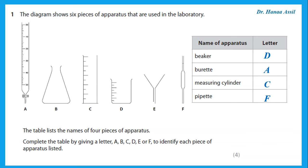The pipette is very accurate. It's used to add a specific amount of solution. If I say I want to add 25.0 centimeter cubed of a solution, I use a pipette. But I cannot use it for any volume because it just has one mark. I fill it to the mark, and I do not have any other graduations. B is a conical flask and E is a funnel.